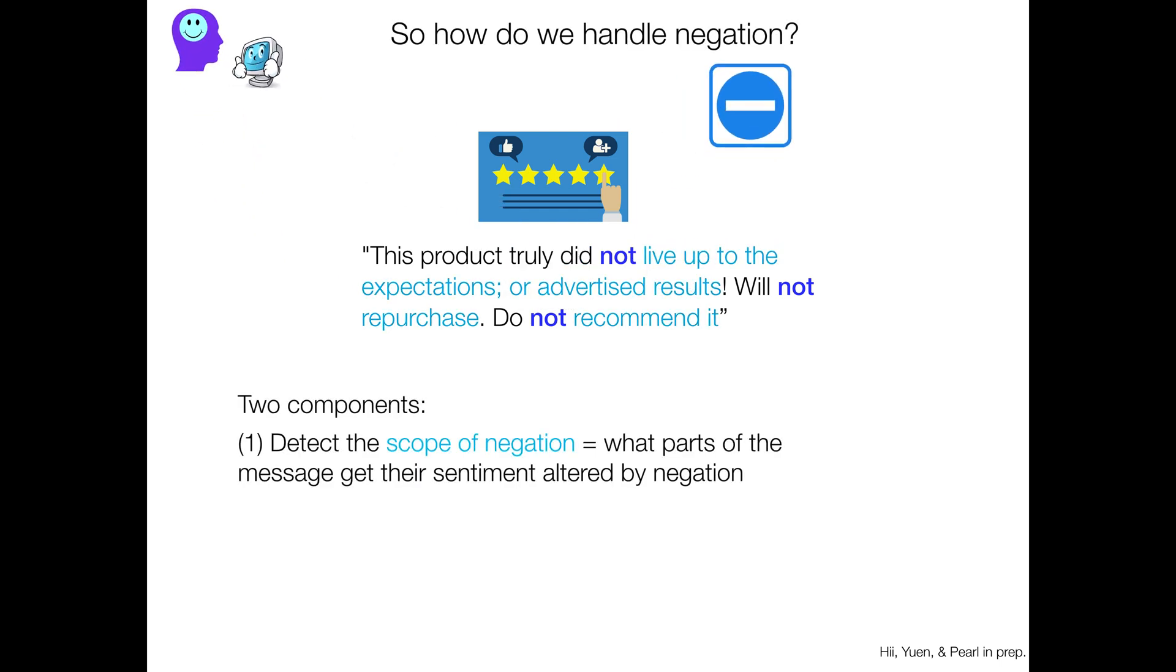And so there are two components to handling negation. And the first is to detect what's called the scope of negation, which is here in the light blue. That's what parts of the message get their sentiment altered by negation. So usually things that are appearing after, though not always, the negation term as we see here.